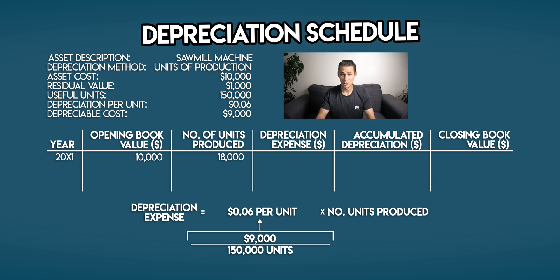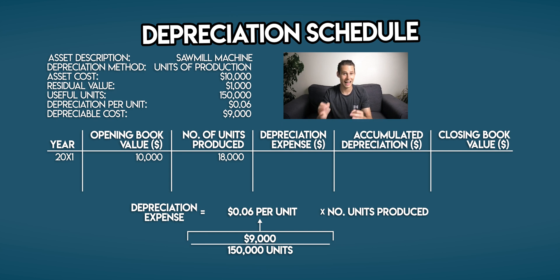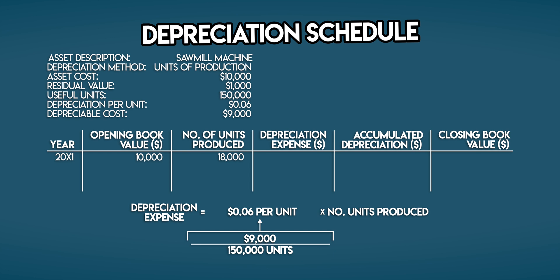By the way, depreciation per unit is very similar to the depreciation rate discussed in other videos, but depreciation per unit is expressed as a cost per unit whereas depreciation rate is a fraction of an asset's useful life. As usual, you can find this formula on the depreciation cheat sheet — links to that and the whole depreciation playlist are in the description. We can now calculate your depreciation expense: depreciation per unit multiplied by the number of units produced. You produced 18,000 units in year one, so multiplying by 6 cents per unit gives a depreciation expense of $1,080.